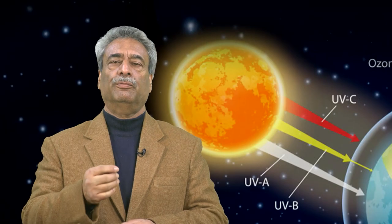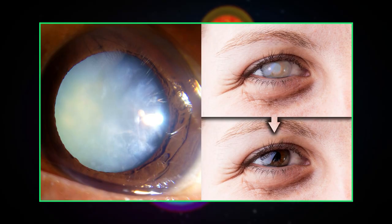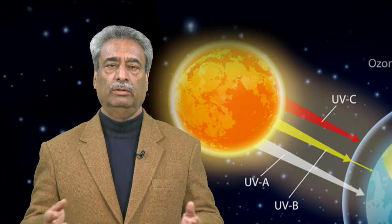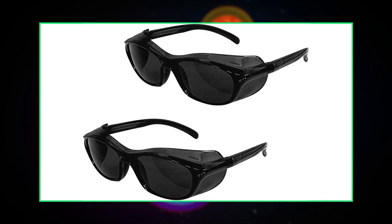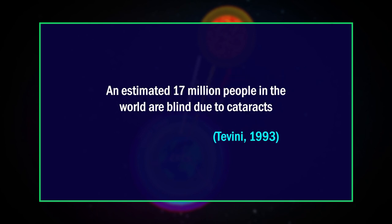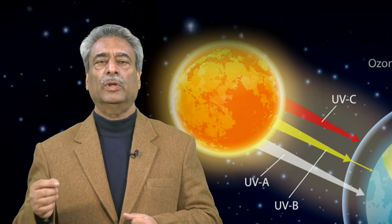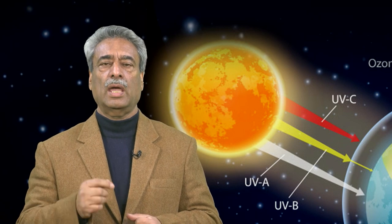Regarding cataracts: potential human health effects on the eye include increased incidence of snow blindness and cataracts. Cataracts cause an acute inflammation of the superficial layer of the eyes, though eye protection is available. Approximately a 0.5 percent increase in cataracts would occur for each one percent drop in stratospheric ozone. An estimated 17 million people in the world are blind due to cataracts, and a one percent drop in stratospheric ozone could cause an additional 3,400 cases of blindness due to cataracts each year.